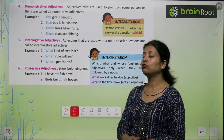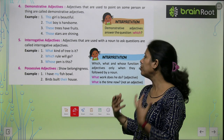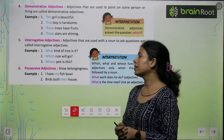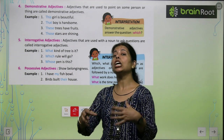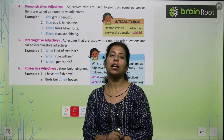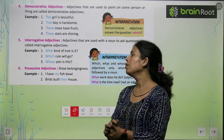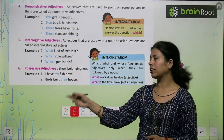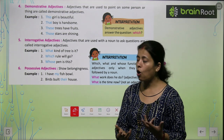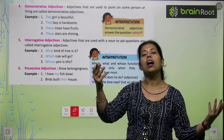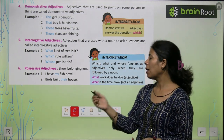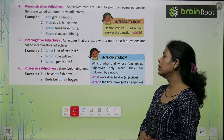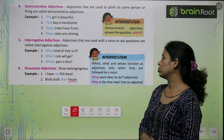Possessive — अपनी किसी चीज के बारे में, belongingness के बारे में बताएंगे, किसी और की किसी चीज के बारे में बताएंगे जो किसी से belong करती है। Possessive — नाम से ही पता चल रहा है। I have my fish ball. Birds build their nests। Possessive adjective।